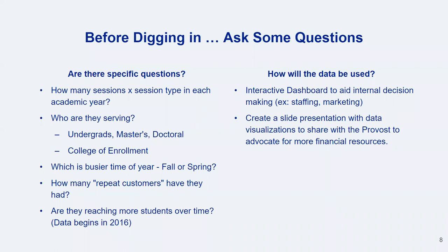Before digging in and getting started, I recommend talking further with your colleagues to understand what they really want to know and why. How do they plan to use their data? Who are their audiences? For example, they may want to know things like how many engagement sessions did they conduct in a year, what type of sessions, who are they serving, do they have repeat students, and are they increasing their reach over time? You'll also want to know if they plan to use findings to make decisions about their work, or if they're planning to share findings with campus decision makers such as the dean or provost to advocate for more financial resources. Knowing this will help guide your next steps and determine what other data you may need.